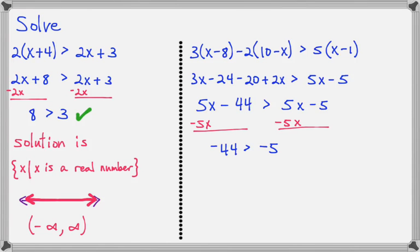And we end up with negative 44 is greater than negative 5. And again, there's no X. See, that's the key to these unusual solution set problems, is that you'll recognize them because there's no X left in the final statement. So you just have to ask yourself: is this true or false?